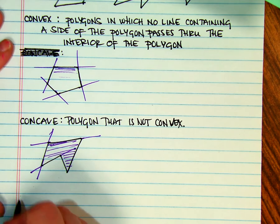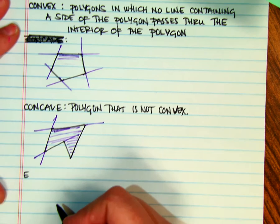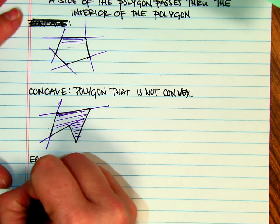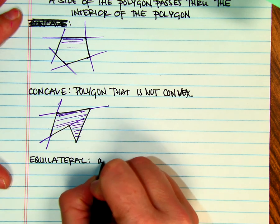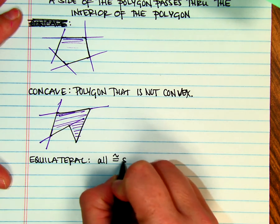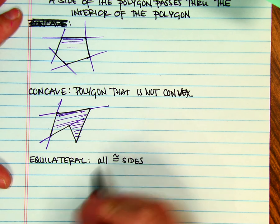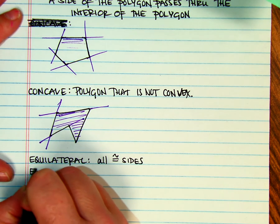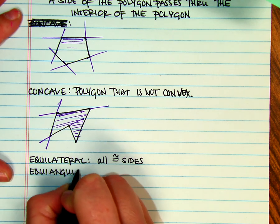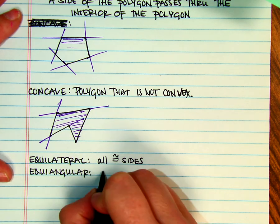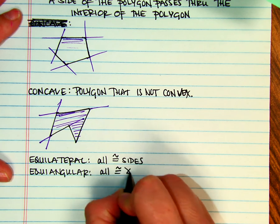We also have some other vocab of an equilateral, which means that it has all congruent sides. And we have equiangular, which means that we have all congruent angles.